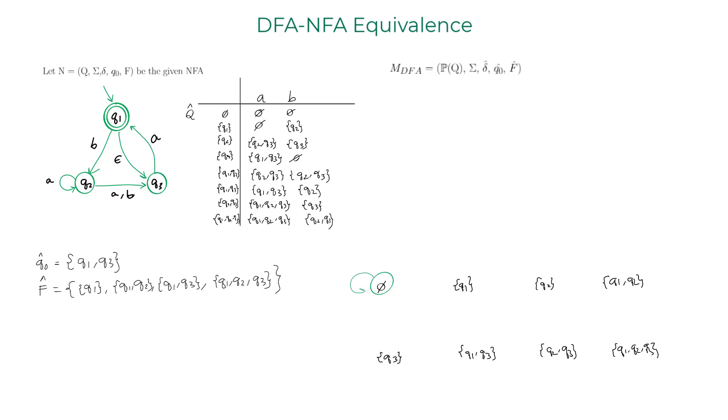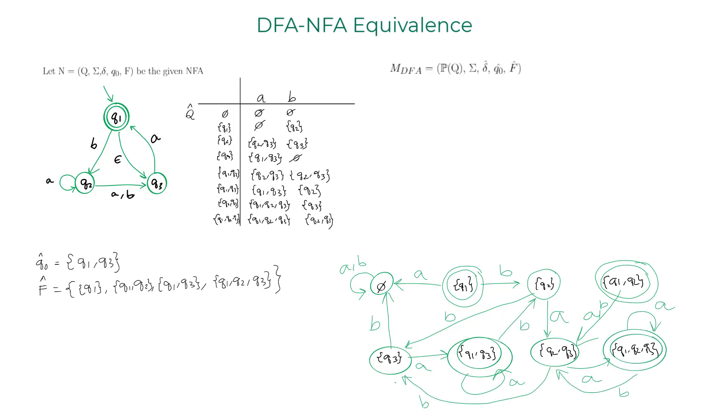With this information, we can draw the DFA which would have these eight states. Let me start with the state phi. Now, let me go to the state Q1. Q1 is an accept state, so I'm going to mark it as an accept state. If it receives character A, it's going to be mapped to phi. If it receives character B, it is mapped to the state Q2. Now let me take care of the state Q2. If it gets the character A, it maps to {Q2, Q3}. If it receives character B, it's going to be mapped to Q3. I'll repeat the same procedure for all the other states in this DFA and arrive at this DFA description.